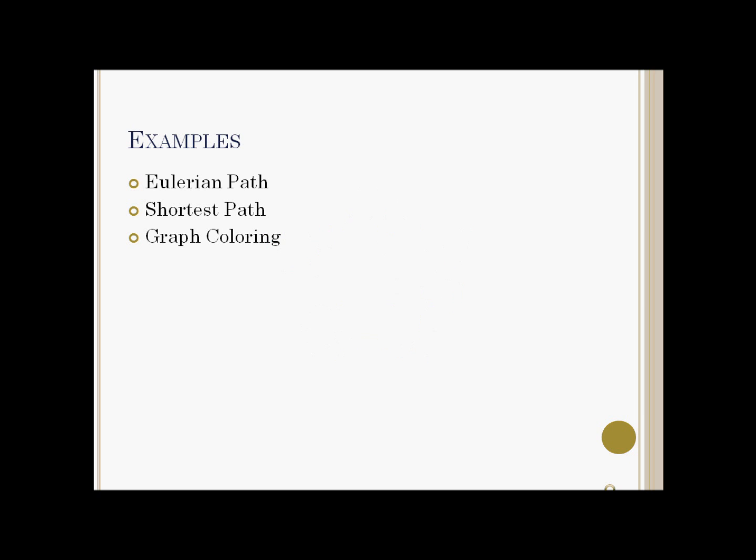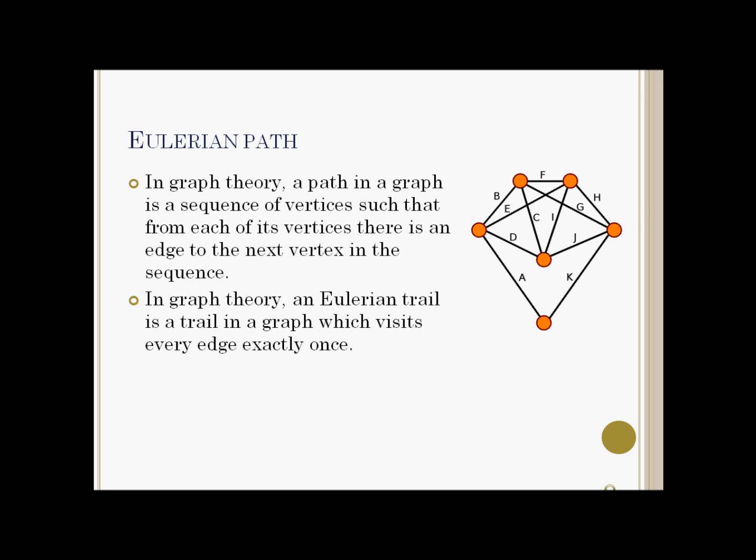Let us discuss some more examples. In graph theory, a path in a graph is a sequence of vertices such that from each of its vertices there is an edge to the next vertex in the sequence. An Eulerian trail is a trail in a graph which visits every edge exactly once.